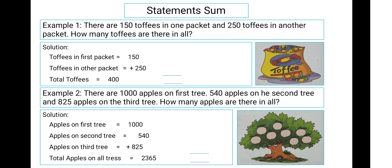Now come to the point when we use addition in our real lives — the statement sum. These sums always help us in our daily lives. For example: there are 150 toffees in one packet and 250 toffees in another packet. How many toffees are there in all? Toffees in the first packet: 150. Toffees in the second packet: 250. Total toffees in both packets are 400.